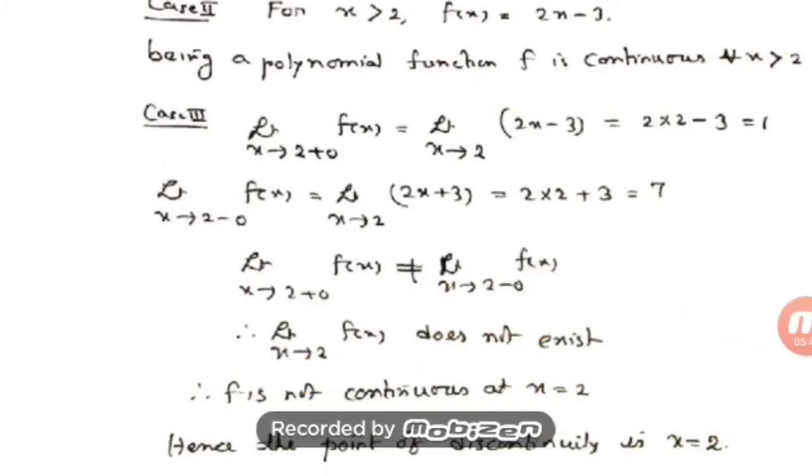Substituting x = 2 in 2x − 3 gives 2(2) − 3 = 1, and substituting x = 2 in 2x + 3 gives 2(2) + 3 = 7. The right-hand limit is 1 and the left-hand limit is 7 — they are not equal. Therefore, the limit as x tends to 2 of f(x) does not exist. Since the limit does not exist, f is not continuous at x = 2.